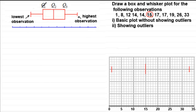Now we need to work out the lower quartile. Because the median was the sixth value, we have five values to the left of the median. To get the middle of these five values, add 1 to get 6, then divide by 2 to get 3 — so it's the third value in. This method works for longer lists too. So 12 is our lower quartile.